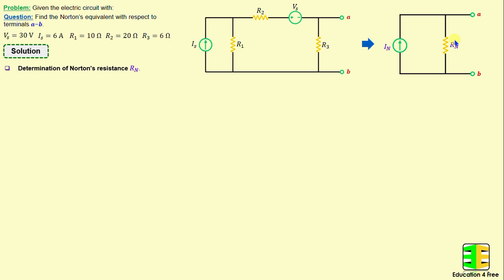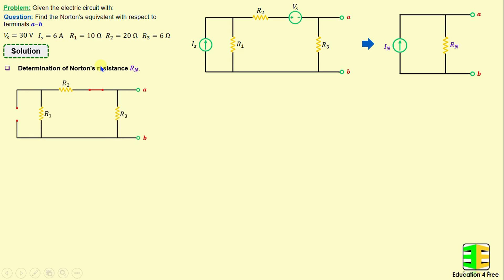I will start first with the determination of the Norton's resistance RN. This step can be done by removing all independent sources in the circuit, which means the voltage source Vs will be replaced by a short circuit and the current source Is will be replaced by an open circuit. The Norton's resistance represents the equivalent resistance between terminals A and B, meaning RN is equal to the series combination of R1 and R2.